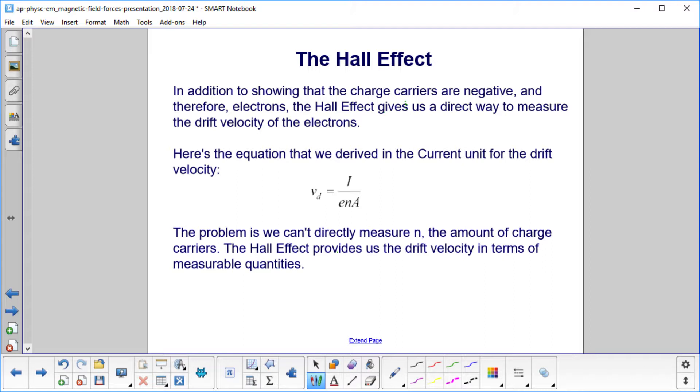In addition to showing that the charge carriers were negative, and therefore electrons, the Hall effect gives us a direct way to measure the drift velocity of the electrons. Here's the equation we derived in the current unit. The problem is we can't directly measure N, which is the amount of charge carriers. The Hall effect provides us the drift velocity in terms of measurable quantities.